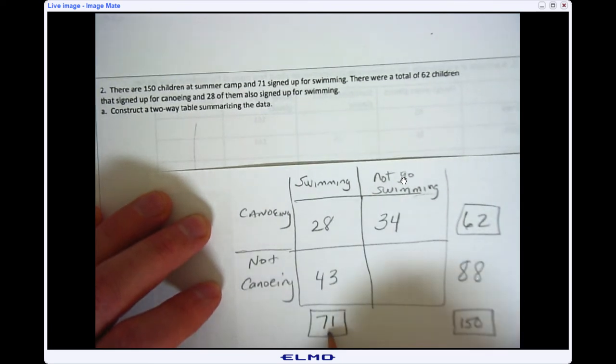And I can do the same thing. 71 plus 79 would be 150 this way. And then to fill in this missing spot, I can take 34 minus 79, and I would get 45. And also 43 plus 45 is 88.